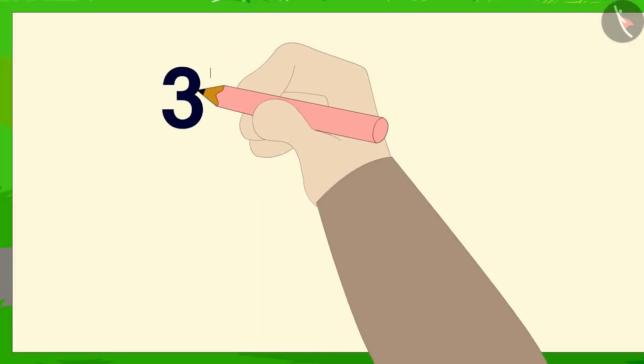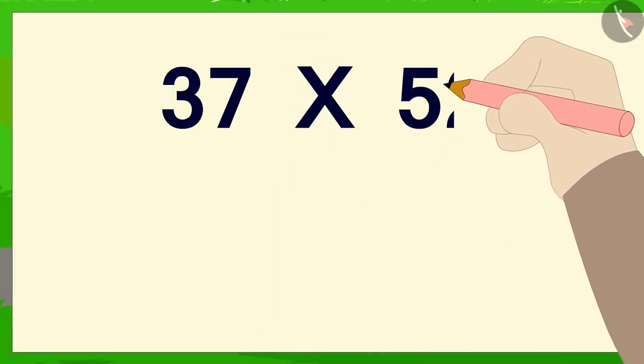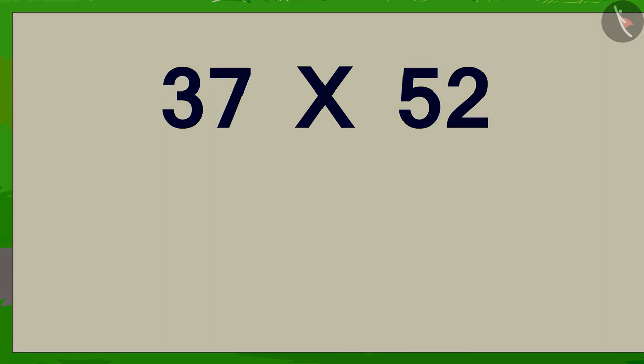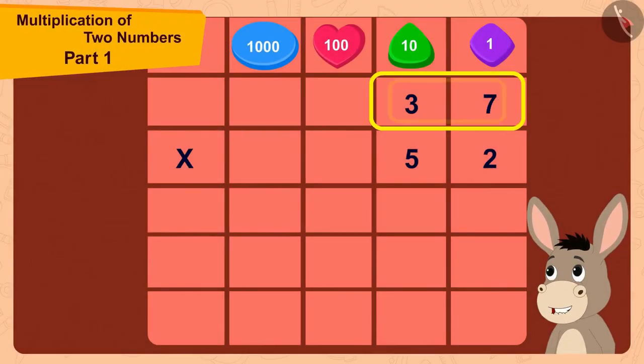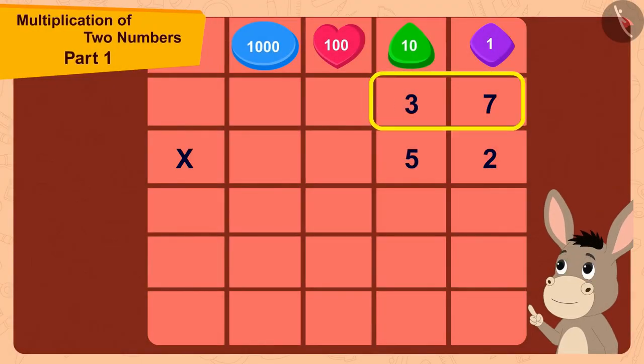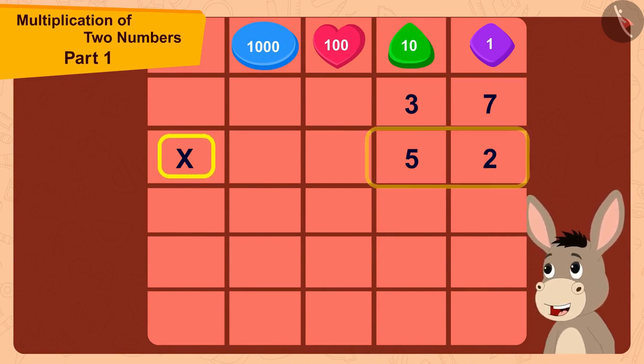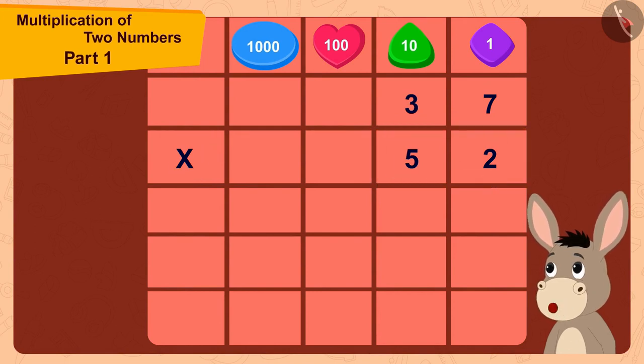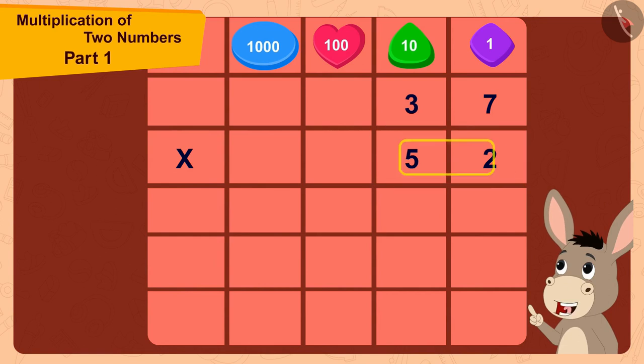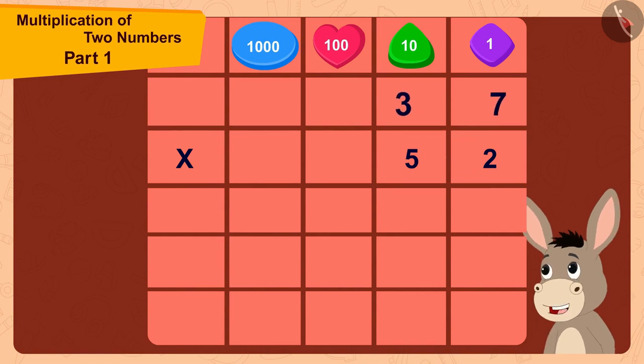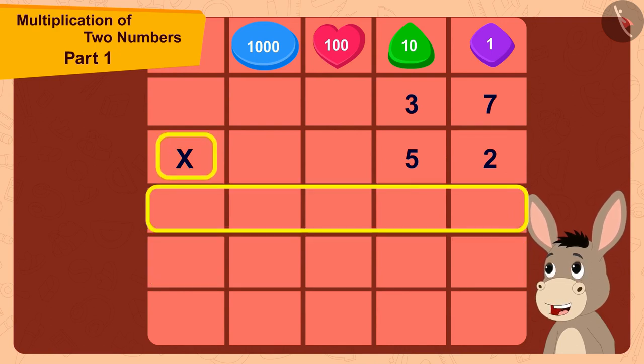He quickly wrote this multiplication on a paper. Here, the two-digit number 37 is being multiplied by the two-digit number 52. And, because 52 is a two-digit number, I can multiply 37 with 52 in two steps.